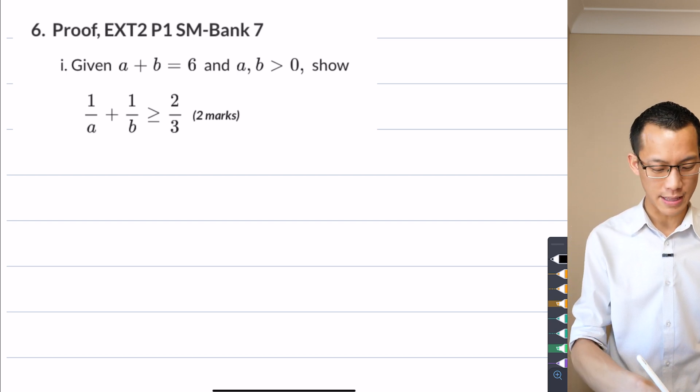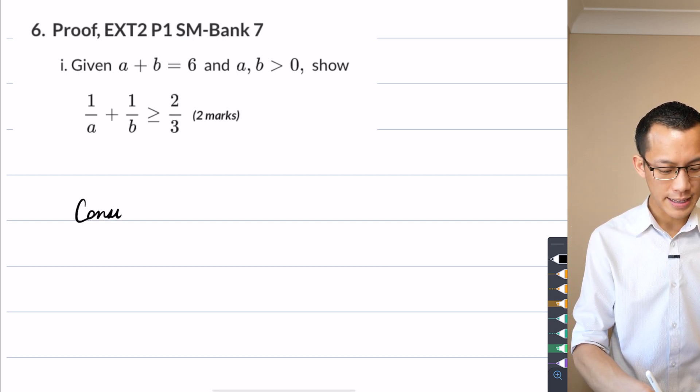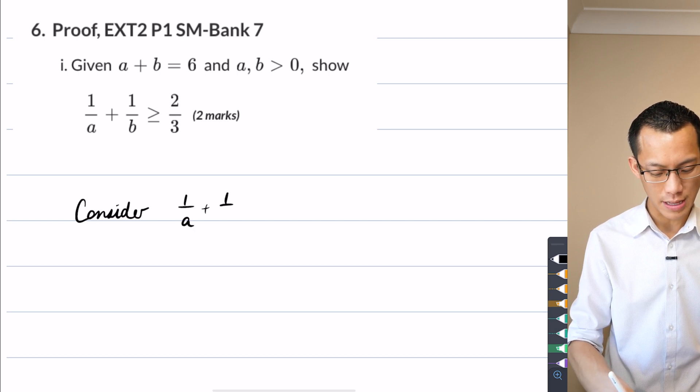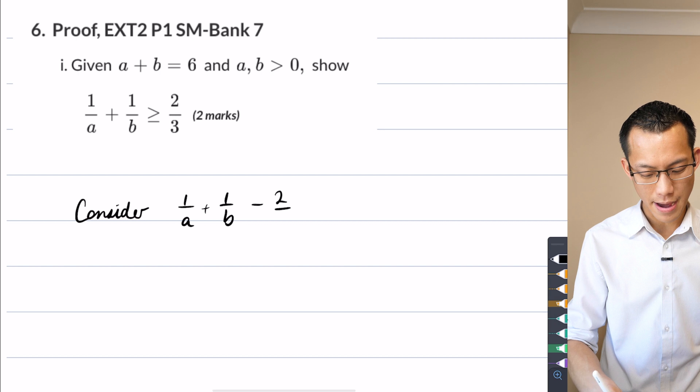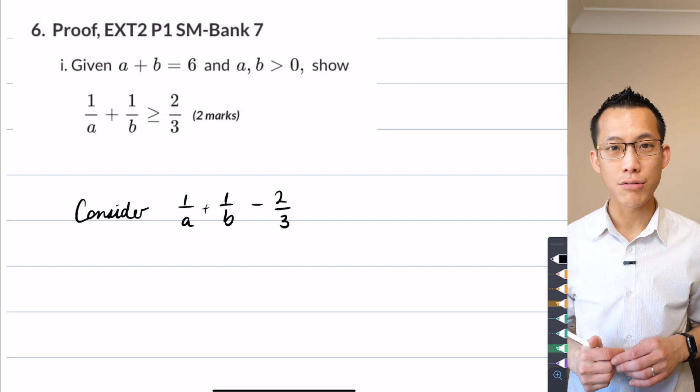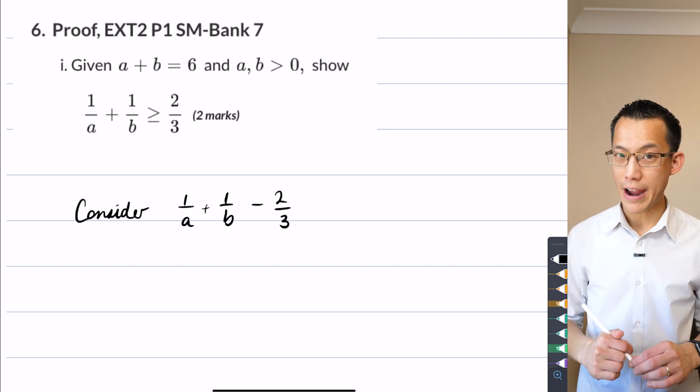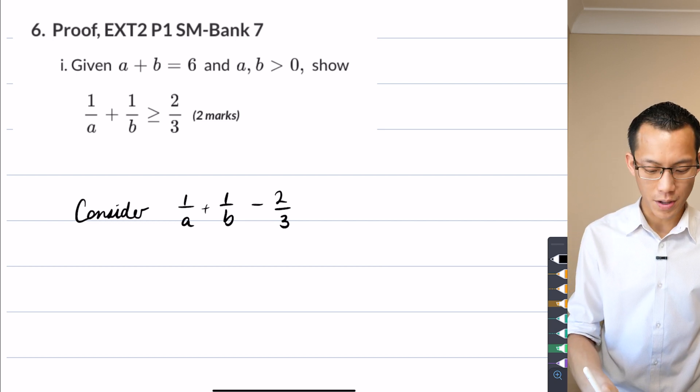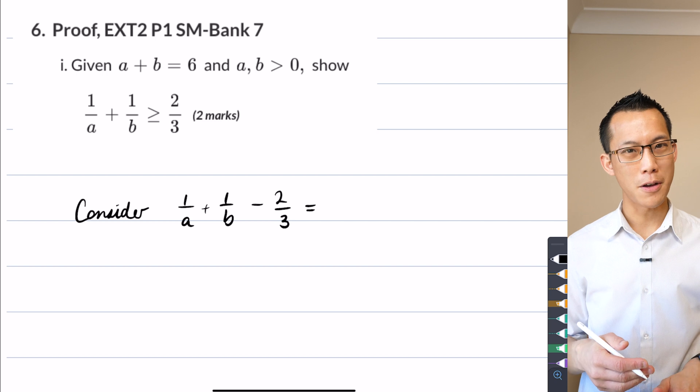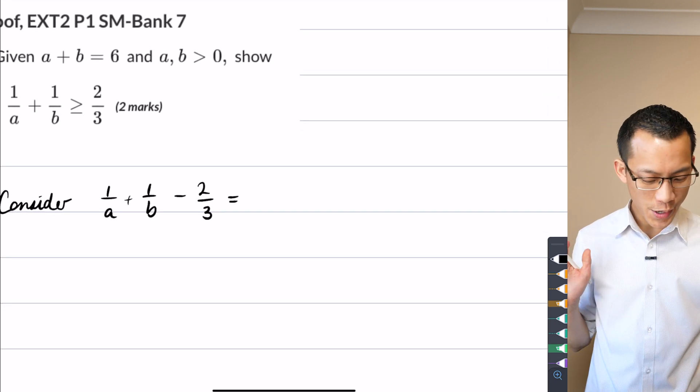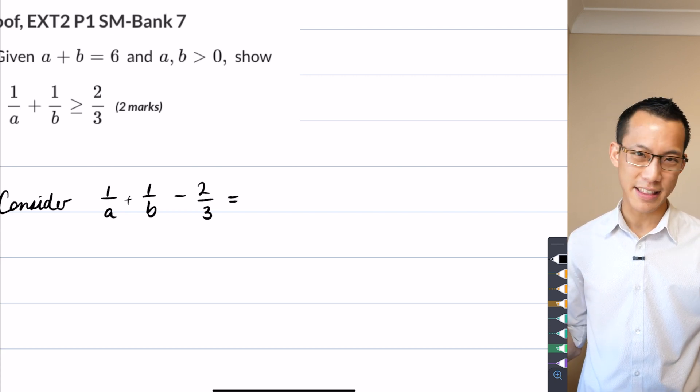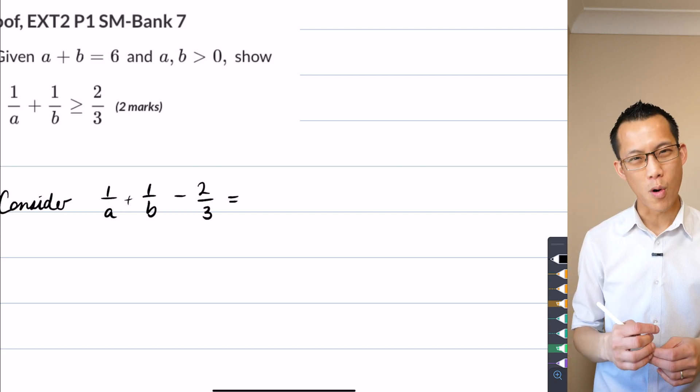So here's the way I set things out. I said, let's consider what happens if we take everything onto the left-hand side. So that would be minus two thirds. I'm just considering this whole algebraic expression. There's no inequalities. I'm going to introduce the inequality once I can make some statements that are reasonable about this, okay?